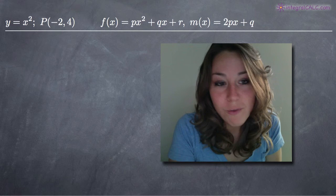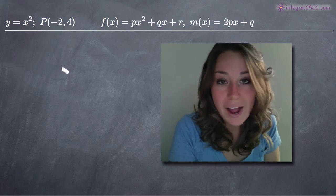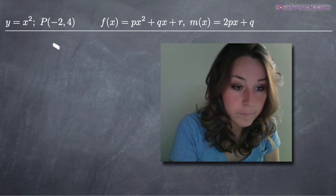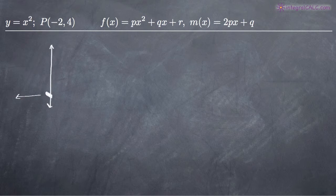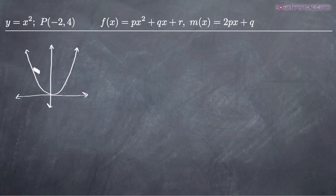Today we're going to be doing another problem with the normal line. We've been given the function y equals x squared and we've been asked to find the normal line of this curve at the point (-2, 4). We've got the curve y equals x squared, and the point is roughly at negative 2, 4.